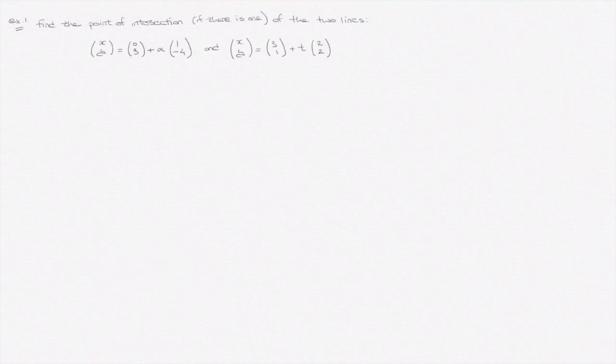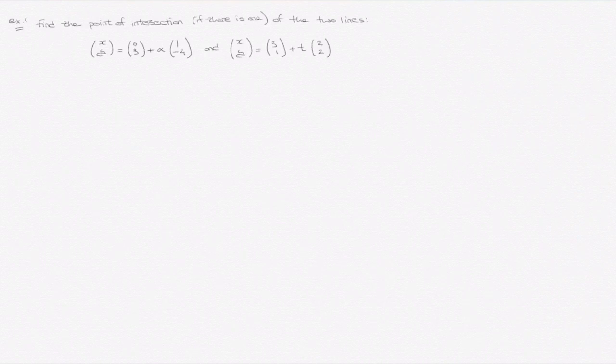In this video we'll learn how to find the point of intersection of two lines written in their vector equations. We're given two lines: xy equals 0, 3 plus alpha times the vector (1, -4), and the line with position vector xy equals 3, 1 plus t times the vector (2, 2).